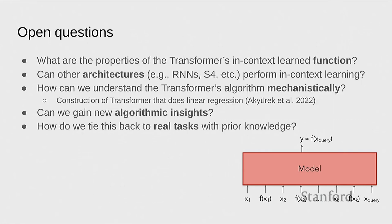There's a follow-up paper which is really interesting, where they actually construct a transformer by setting its weights and show that it can do linear regression. They also do probing experiments to look inside the transformer, whereas we are only looking at behaviors. One question is whether we can get algorithmic insights — this is something I'm excited about because it might teach us something about algorithm design. The decision-trees case, where the transformer actually does much better, suggests there may be other algorithms or principles we can pull out.